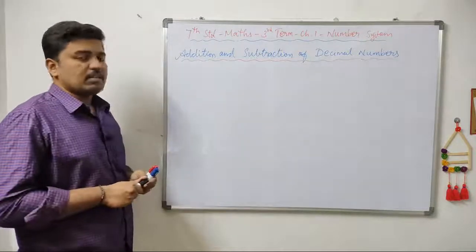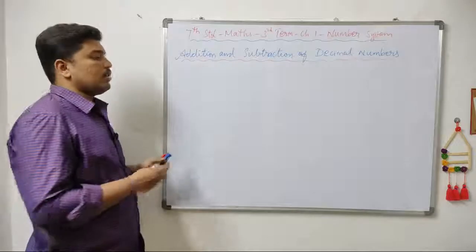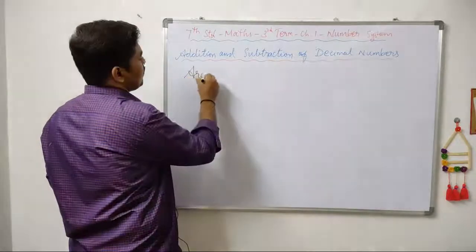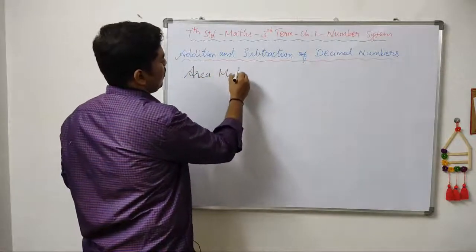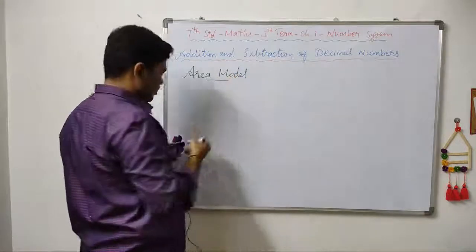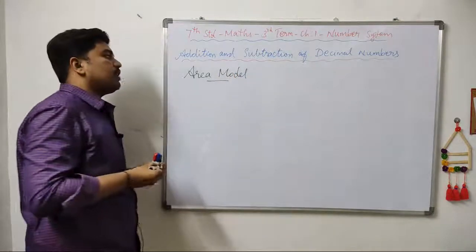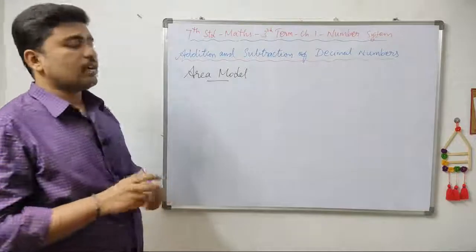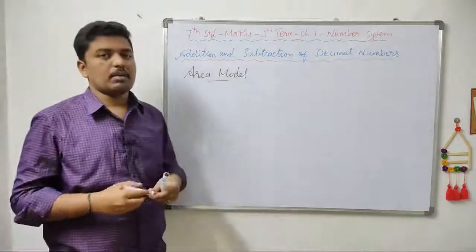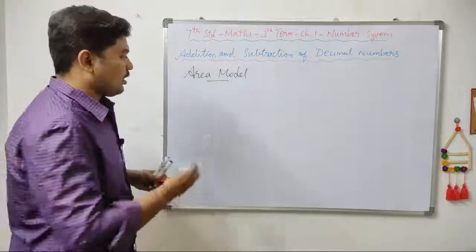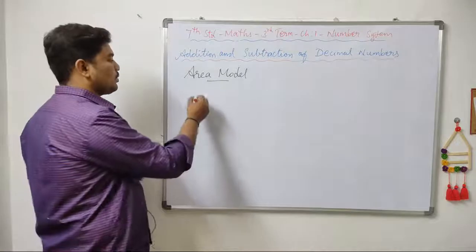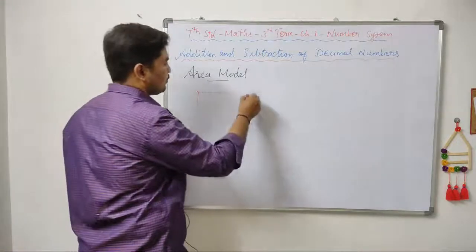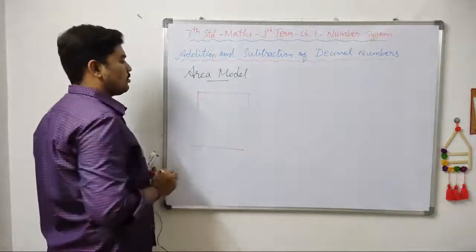Addition and subtraction of decimal numbers. Area Model. When we use this model, we will add decimal numbers and subtract. We will consider the whole as a square.